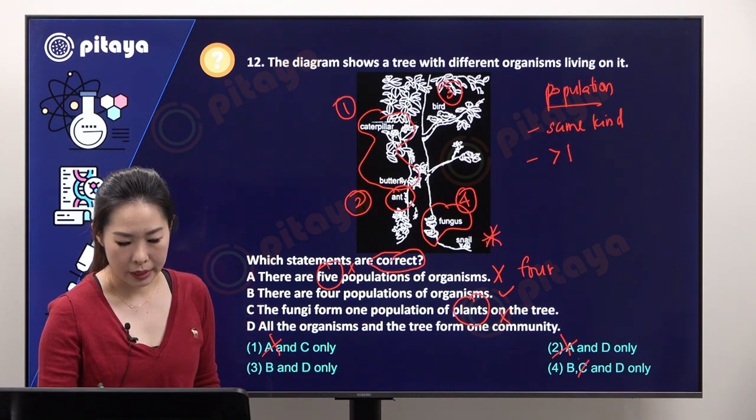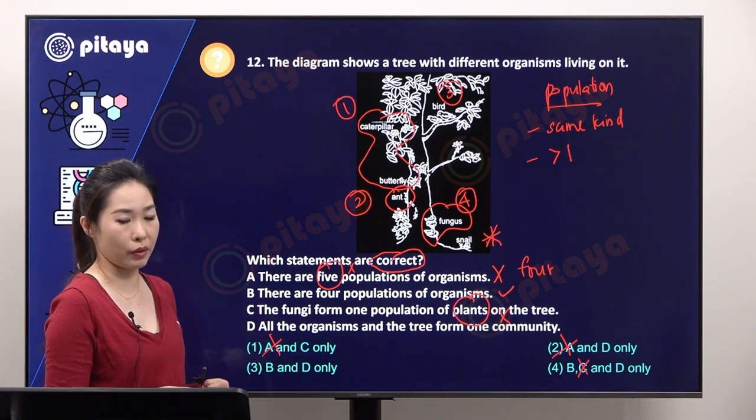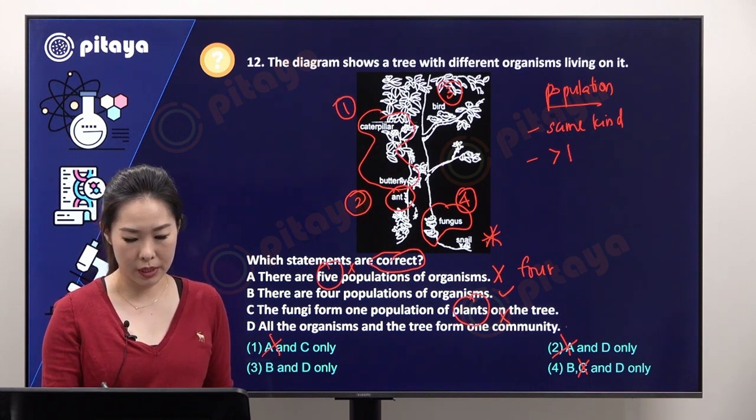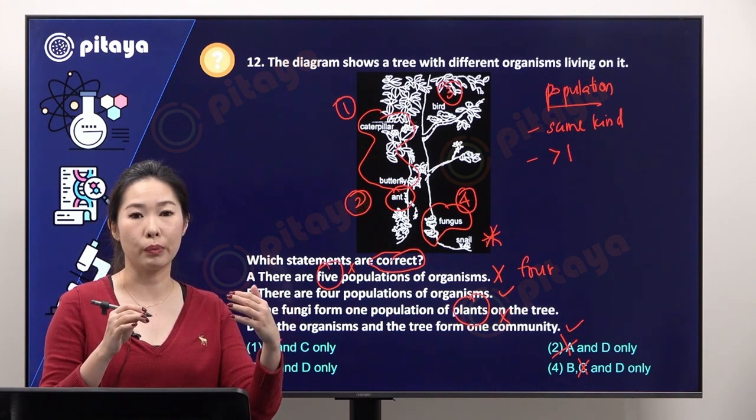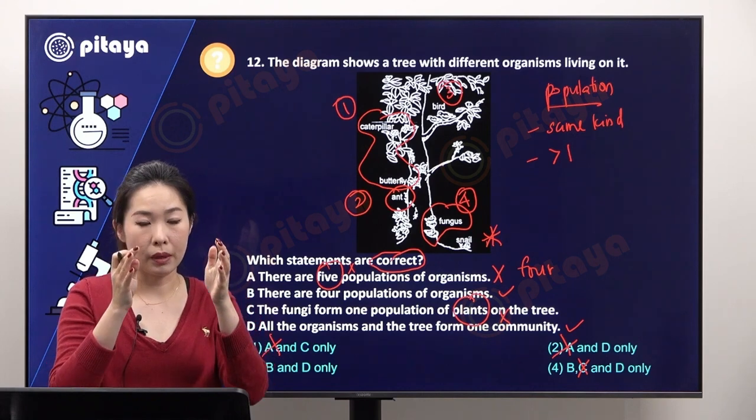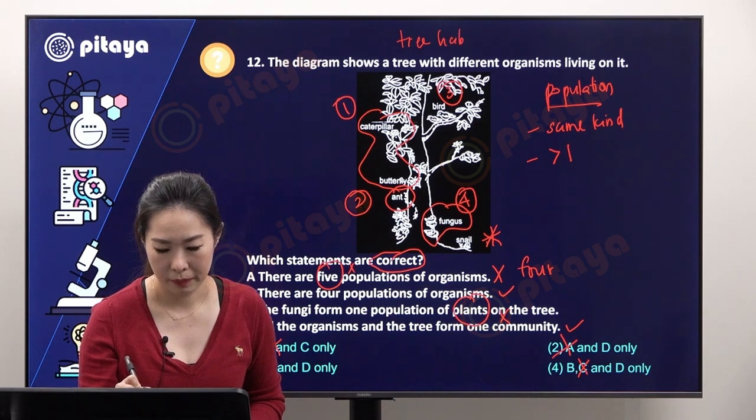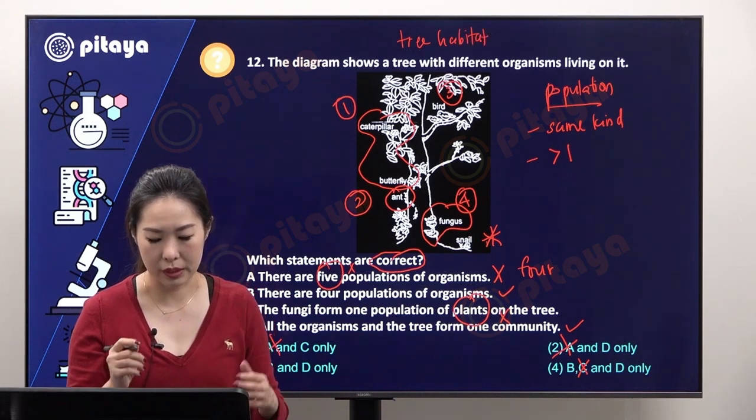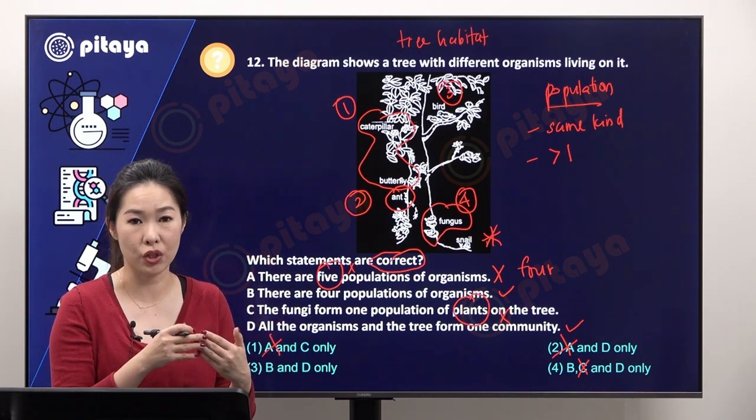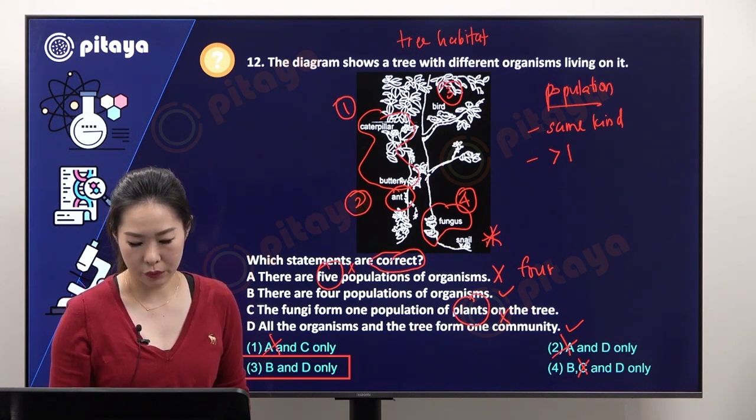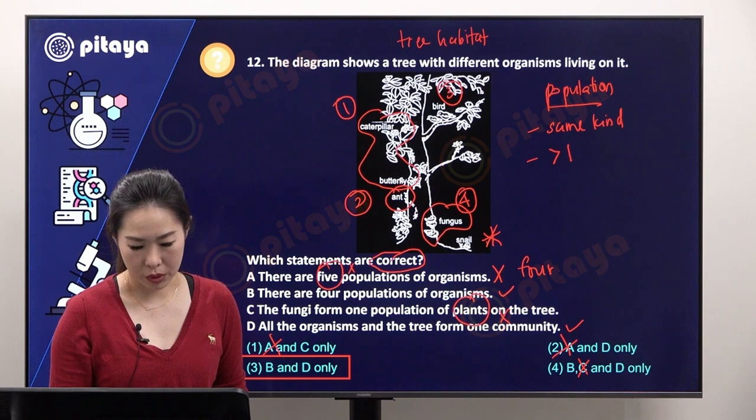We eliminate C and double check whether D is correct. So all organisms on the tree, they form one community. It's correct. All different populations living in the same habitat. The habitat here is a single tree habitat. Living in the same habitat and depending on each other for survival, D is correct. So the answer for this should be option three.